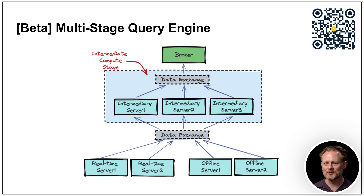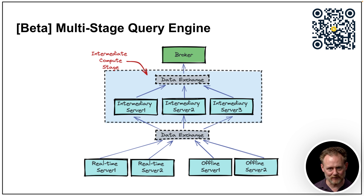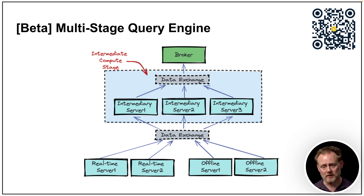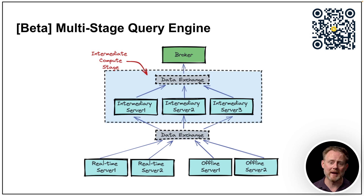The last feature — and maybe the biggest — is the multi-stage query engine. It's not ready for production use yet; it's marked as beta, or pre-release. It's in the 0.11 release, and if you build from source, the most current main branch might be even better to use. It's changing rapidly being a pre-release feature, but it's very, very important.